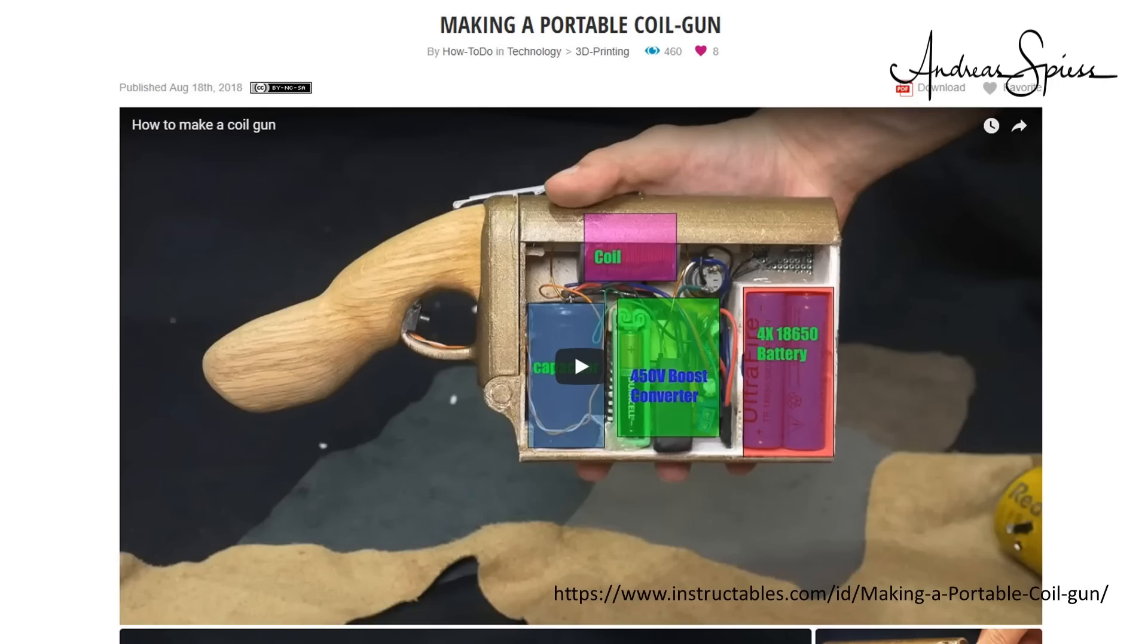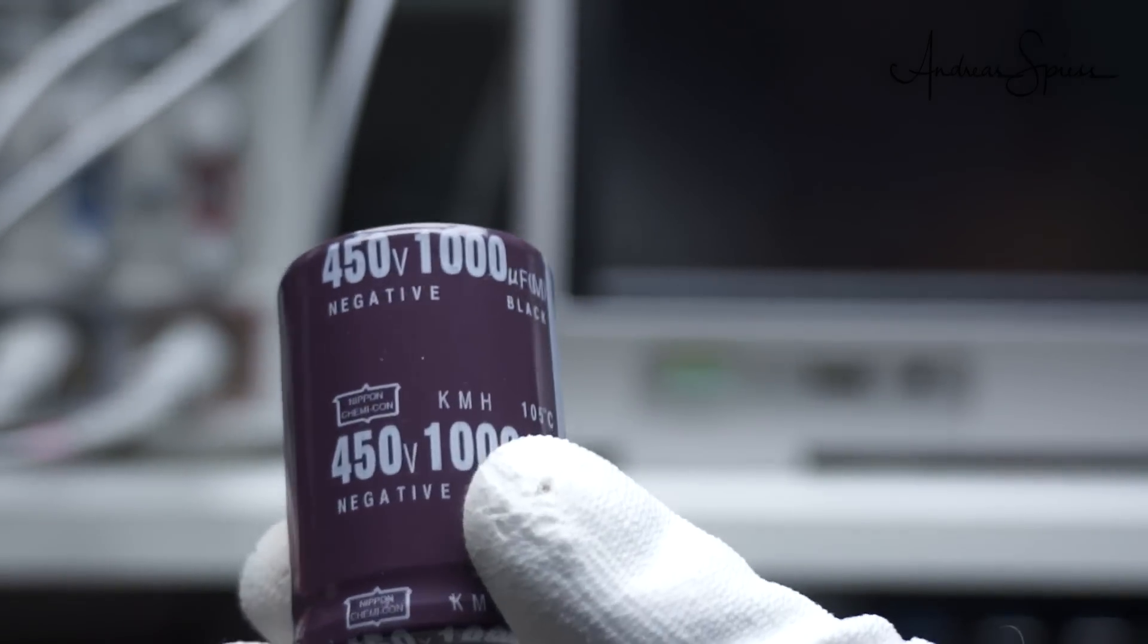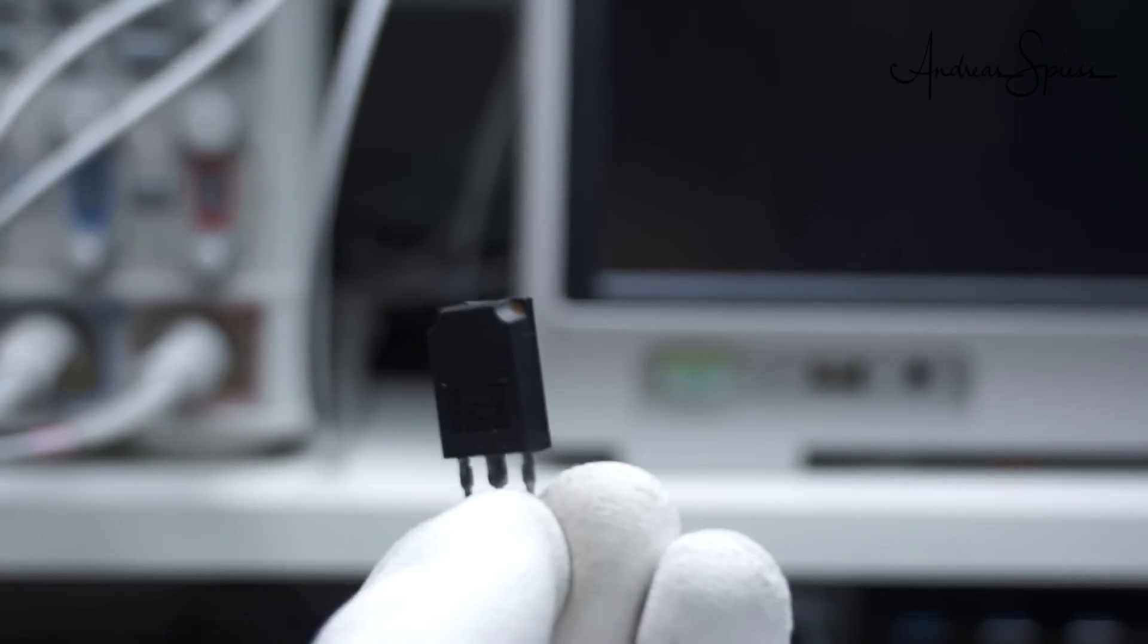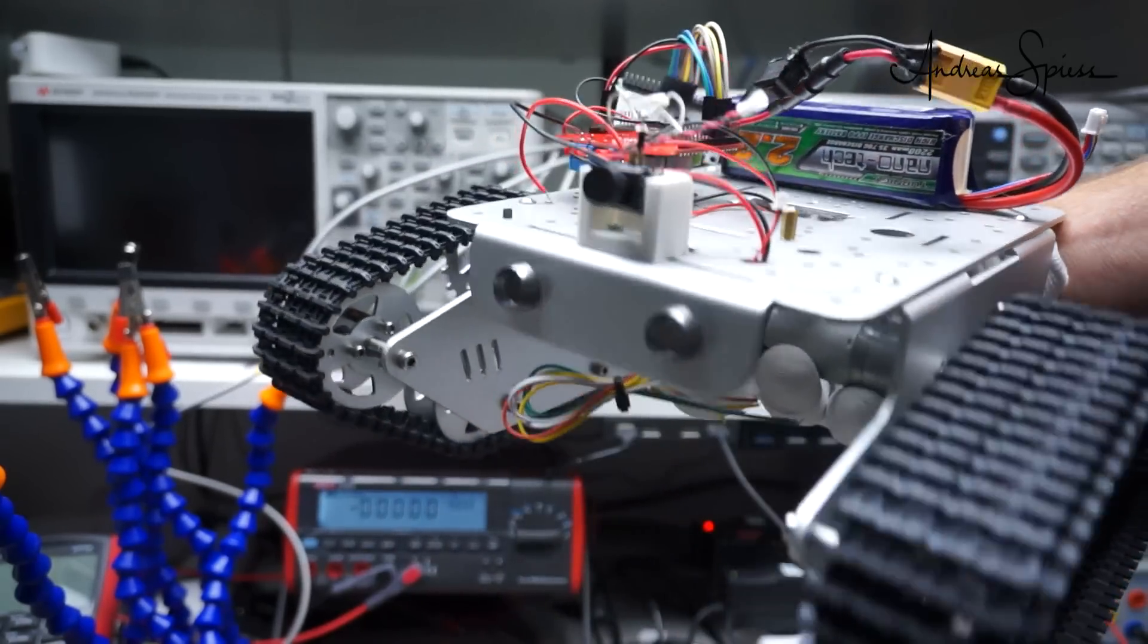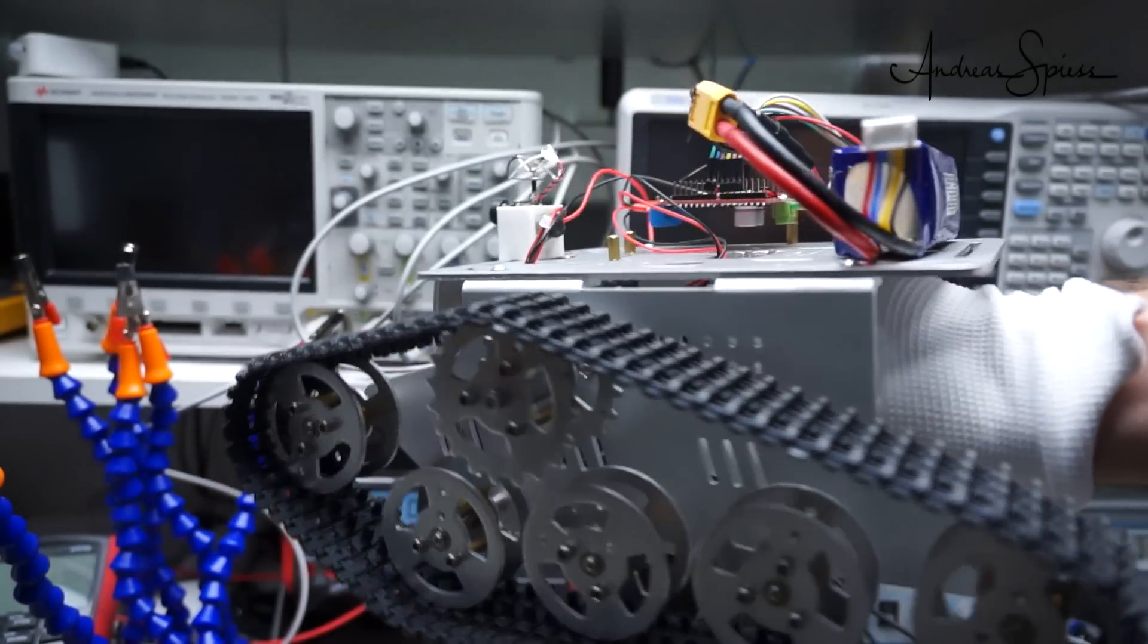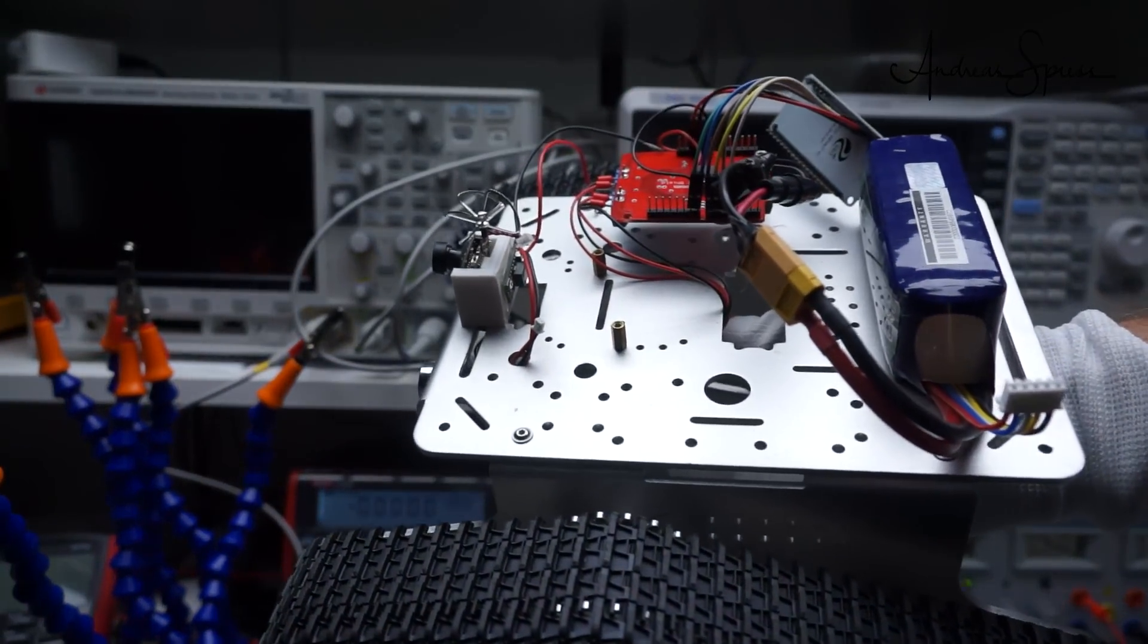When I saw this instructable, I knew this is much closer to what I want. It uses a capacitor to store 400 volts and a thyristor to switch the current. This should provide the needed current. But the gun on the tank has to be remotely controlled, not manually. So we have to enhance it. And now, the sad part of the story begins.